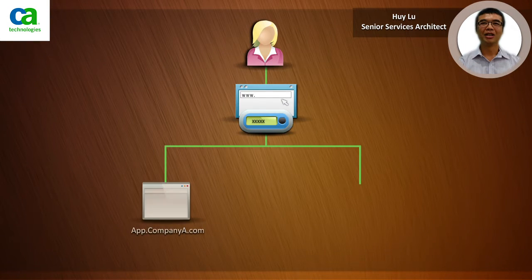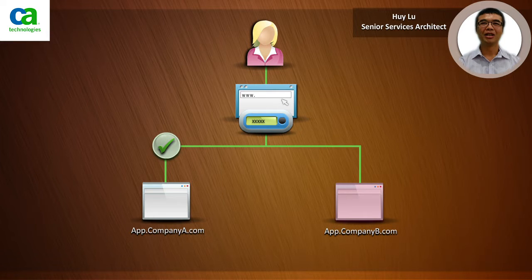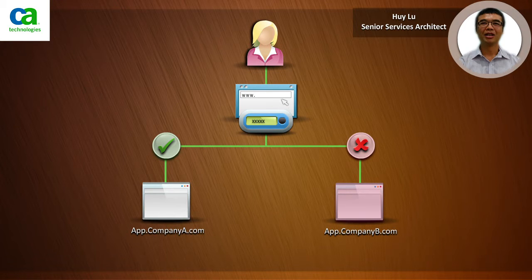One of the issues with single sign-on between different cookie domains is that a cookie for one domain is not valid for another. For example, an SM session cookie in the app.companya.com domain will not be valid for the app.companyb.com domain. This is an inherent security feature of the web — the browser will simply not send the SM session cookie to the companyb.com domain.